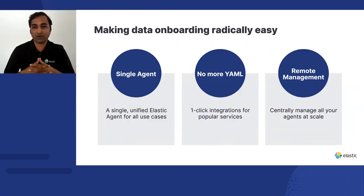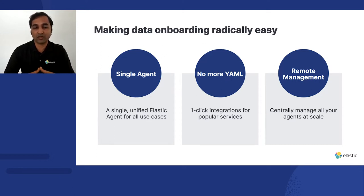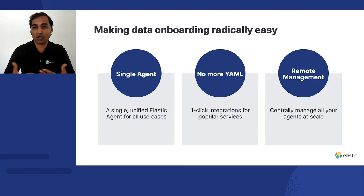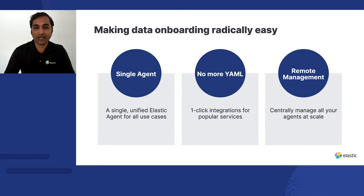There are three main pillars for the radical improvements we've shipped. It starts with Elastic Agent — folks familiar with Beats know we had a beat per use case, and now there's just one unified agent for all use cases Elastic supports. Second is one-click integration, a UI-based configuration management approach for whatever software you're trying to observe or protect. And third, probably the most important part, is the remote and central agent management of a fleet of agents, aimed at simplifying data operations.